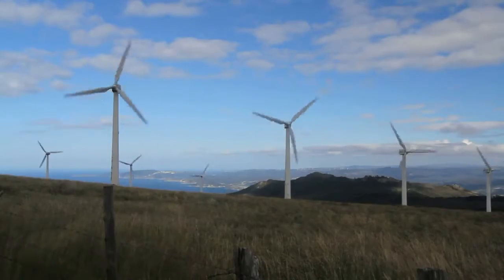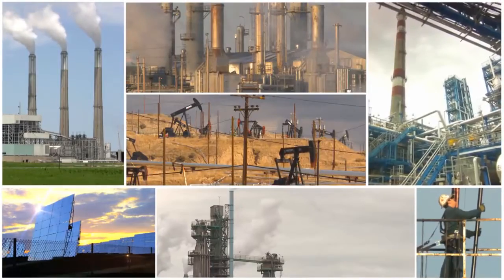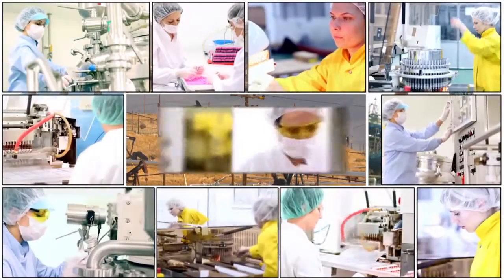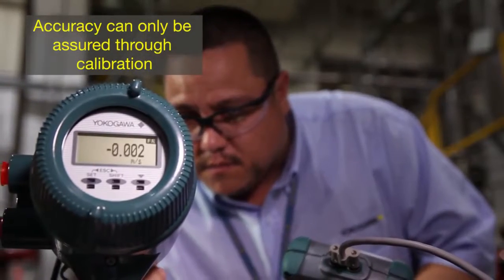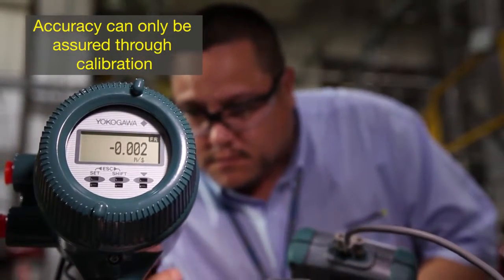Drift, environmental factors, electrical supply, and the addition of components to an output loop and process changes can all cause process instruments to lose their accuracy. Only by calibrating those instruments can accuracy be assured.